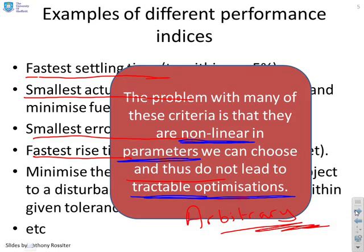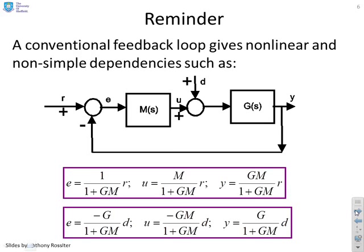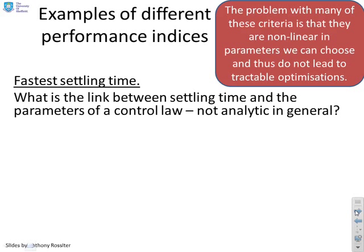If you look at your conventional feedback loop, and here's a simple one with an input disturbance model, and I look at the mappings from the target to the input, output, and error, or the disturbance to the input, output, and error, and what you notice is they're all non-linear in the parameters M of the control law.